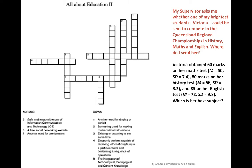I gave another exercise in the lecture divided into two sections: one is a crossword puzzle that attracts those in the literacy area, and another which is a math or statistics question. My supervisor asks whether one of my brightest students, Victoria, could be sent to compete, and I provided Victoria's course scores in maths, history, and English. The question I asked in the lecture was: which is the best subject? Part of the joint enterprise means you really negotiate with each other — some of you might do literacy, while others handle the statistical section, or the community sticks to what it does best.